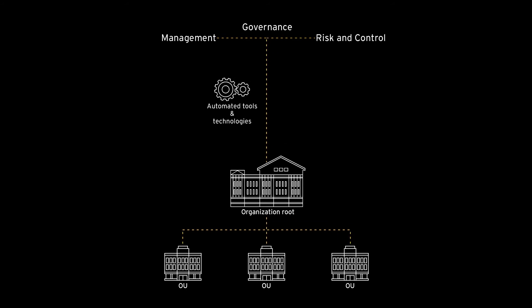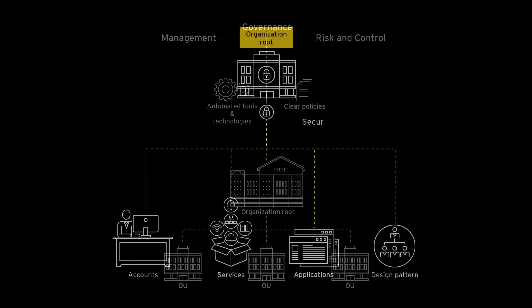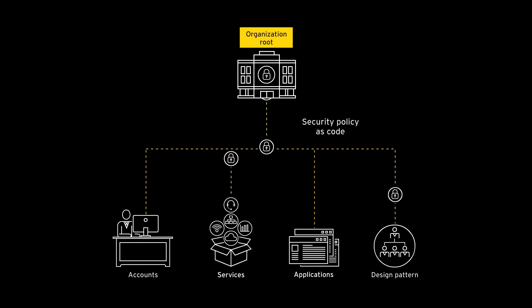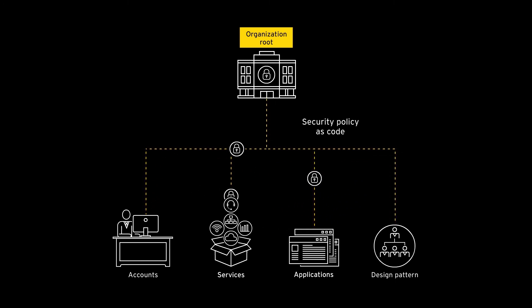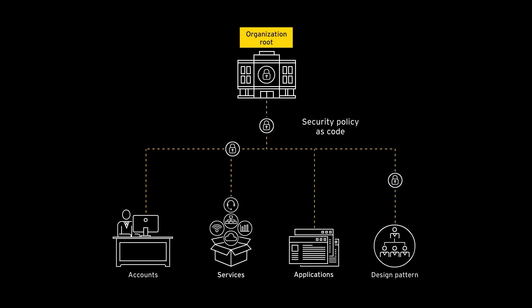Second, governance should be established through clear policies at the highest level of the cloud organizational structures and should automatically be applied to all cloud resources. Organizations also need to ensure that security policies are not kept in writing but are implemented and applied as code at the root of the organizational tree. They must ensure that there are tools to monitor that the organizational policy as code is not modified.